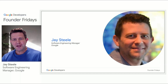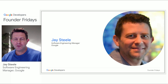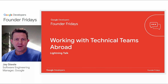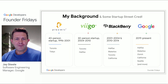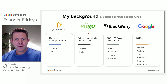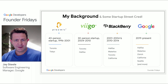Hello everyone, my name is Jay Steele and I'm a Software Engineer Manager at Google. Today I'm going to be talking about working with technical teams abroad. I'll kick this off with a little background on me. Here are a couple of the companies I've worked for in the past, including a couple of startups on the left, Plasmic and Vigo, and larger companies on the right, Blackberry and now Google.